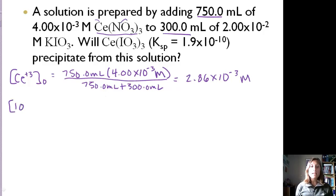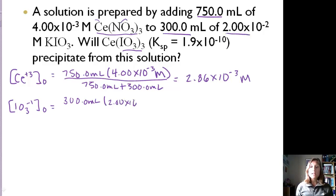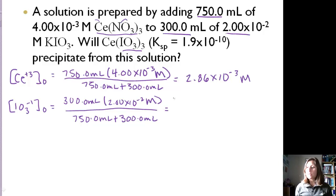Now for the iodate: we start with 300 milliliters at a concentration of 2×10⁻² M. Multiplying gives us the millimoles of iodate. We divide by the same total volume — 750 mL + 300 mL = 1050 mL. That gives us 5.71×10⁻³ M for the iodate ion.